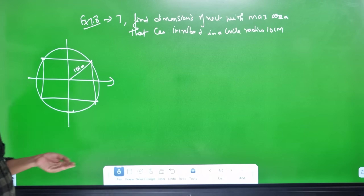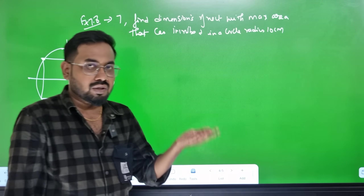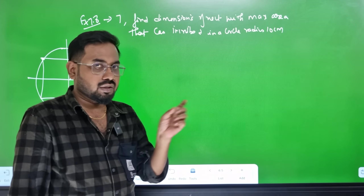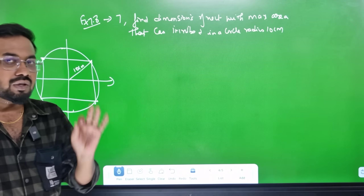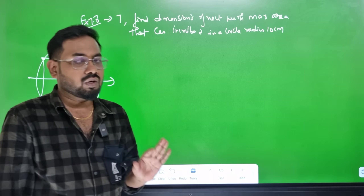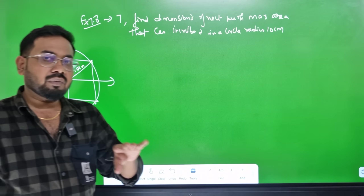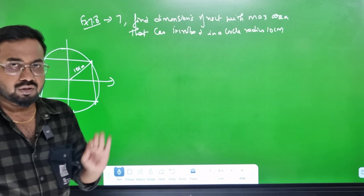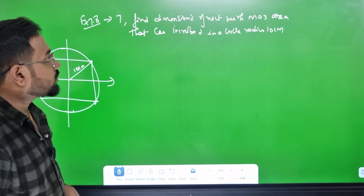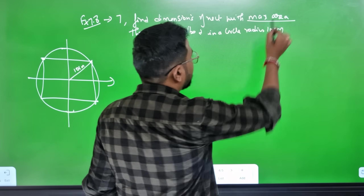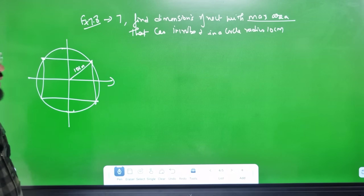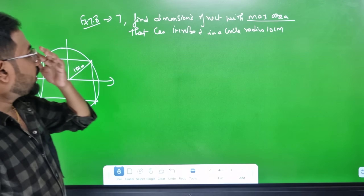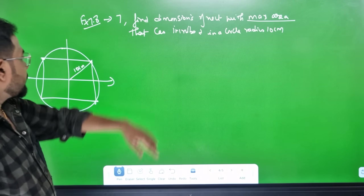We differentiate the function. First, find the critical number where the first derivative equals zero. That critical number gives us the local maximum or minimum — this is the point of maximum area.